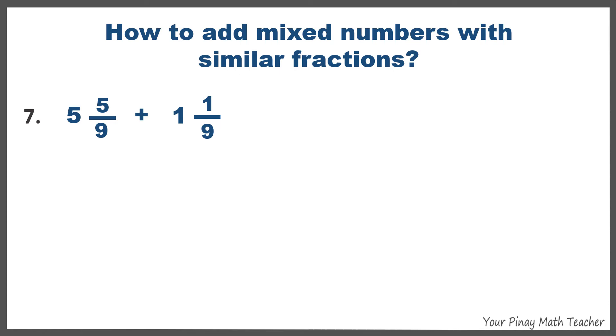Number seven, 5 and 5 ninths plus 1 and 1 ninths. First, you have to add the whole numbers 5 and 1, so we get 6. Then add 5 ninths and 1 ninth, we get 6 ninths. Since 6 ninths can still be reduced by 3, bring down 6, and the reduced form of 6 ninths is 2 thirds. So, the final answer is 6 and 2 thirds.